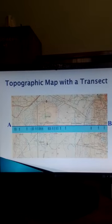For example, in this map, which is a topographic map, it has this line AB, which is the transect. It is labeled A at the beginning and B at the end.